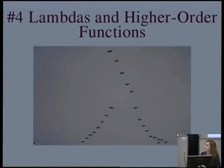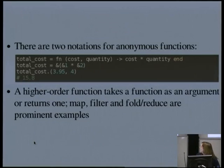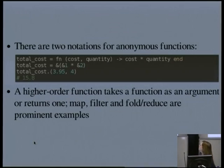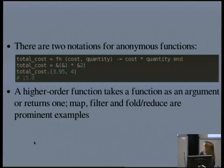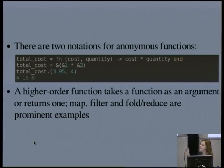Next up, lambdas and higher-order functions — bread and butter of a functional world. Lambdas are just anonymous functions and there are two different ways you can write those in Elixir. So if you want to multiply cost by quantity you can use fn and then the right arrow and end, or you can do the same thing using the partial application syntax — using ampersand and just saying multiply whatever the first argument is by the second argument. When you call anonymous functions in Elixir you do need to include parentheses and the dot — that's just a quirk of the language.